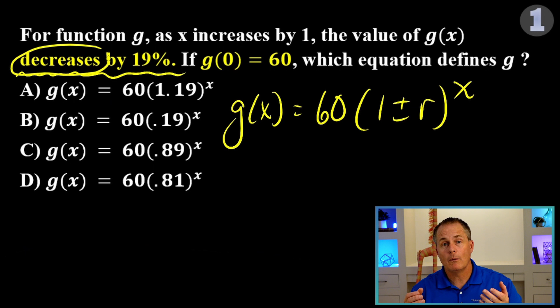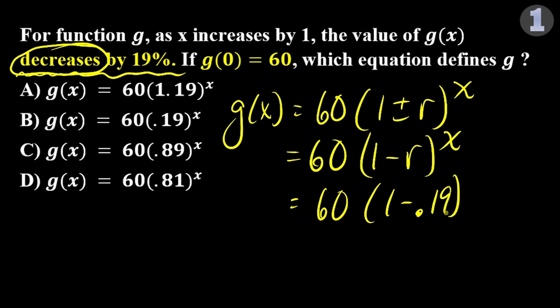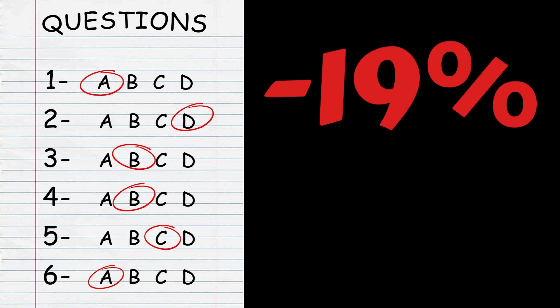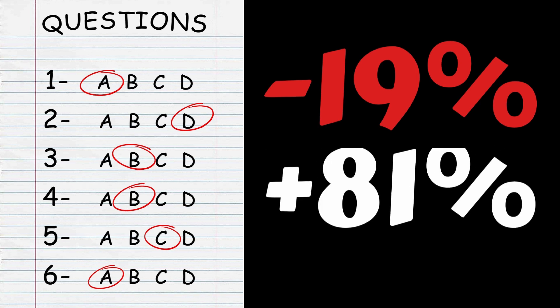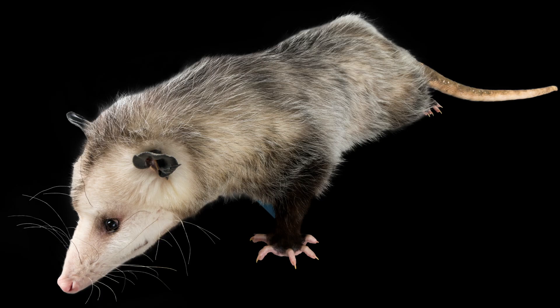In this problem, we want the values to decrease. So, we're going to multiply by 1 minus the percent of decrease. 1 minus 19 percent is 81 percent. So, the answer is D. Now, stop and think about that for a second, though. If you missed 19 percent on a test, what percent did you get right? 81 percent. That's why we have the 0.81 multiplier.